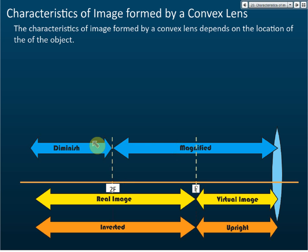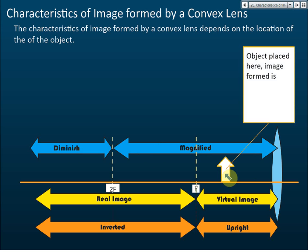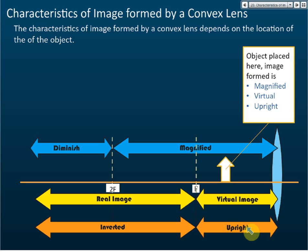Less than 2F is magnified — the image is bigger — and more than 2F is diminished, meaning it's smaller. So if you put your object here, the image is magnified, virtual, and upright. With the help of this chart, you can memorize it much easier: less than F gives virtual and upright; more than F gives real and inverted.